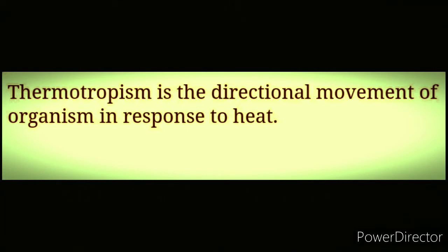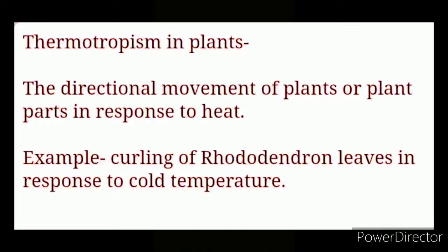Here, the external stimulus is heat. Thermotropism in plants is the directional movement of plants or plant parts in response to heat or a change in temperature. For example, the curling of rhododendron leaves in response to cold temperature is an example of thermotropism.